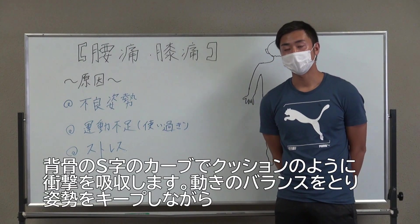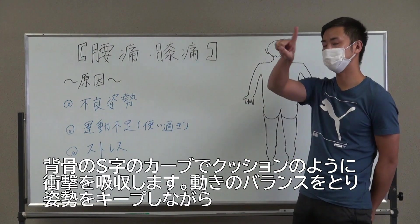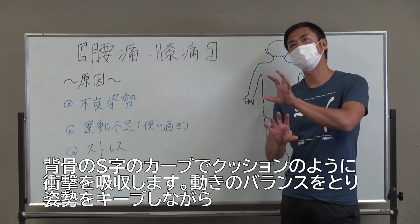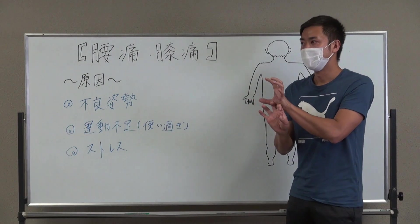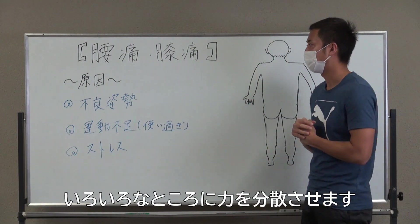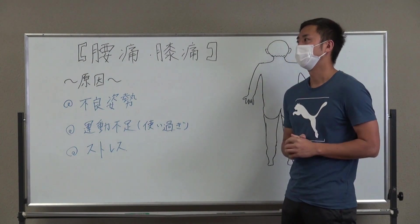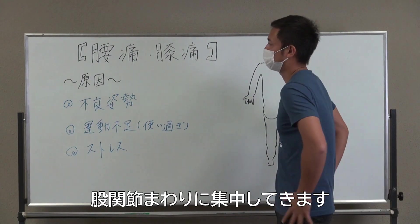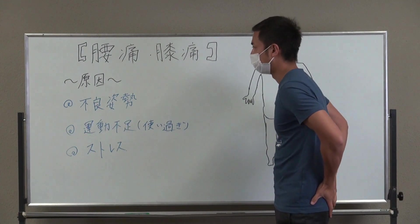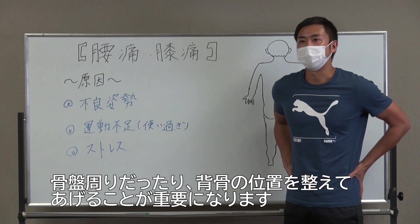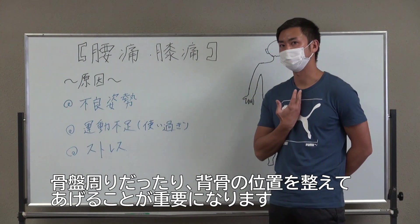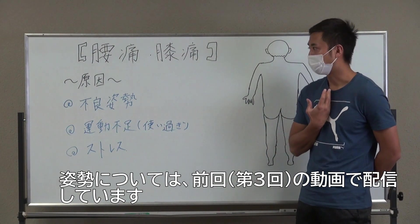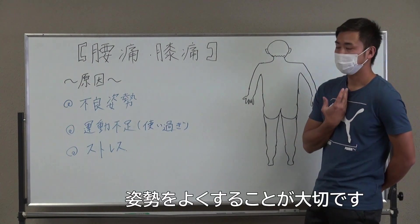まず一番多い3つの原因の一つ目は不良姿勢です。姿勢が悪い方に結構腰痛は多いです。なぜかというと、背骨はS字のカーブを描いていてそれがクッションになって衝撃を吸収したりバランスをとるために姿勢をキープしながらいろんなところに力を分散させていくんですね。姿勢が崩れてくると、かかってくるストレスが腰、特に股関節周りに集中してきます。なので、骨盤周りや背骨の位置を整えてあげることがすごく大切なポイントになります。